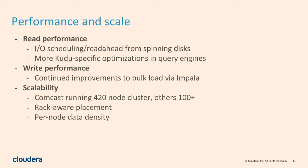Performance and scale are the bread and butter of these distributed systems. We are working on increasing our scale limits and increasing how much data per node we can store. We've got clusters like Comcast running on about 400 to 420 nodes, but we're really recommending sub-hundred nodes at this point for most people. We want to push that limit up closer to a thousand over the next year.